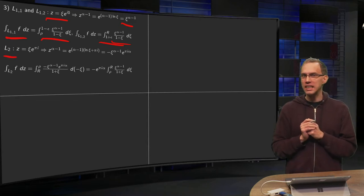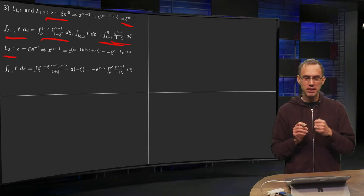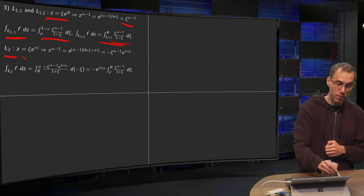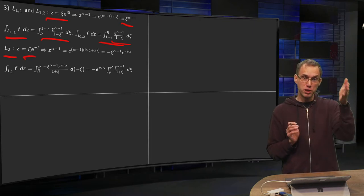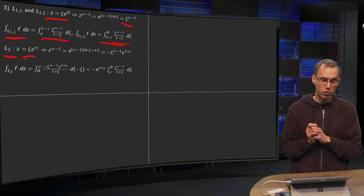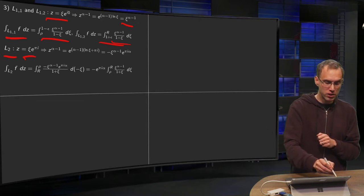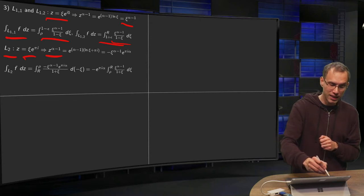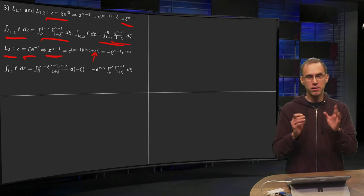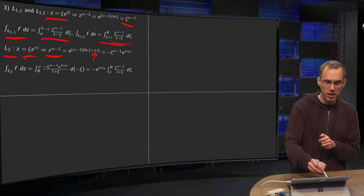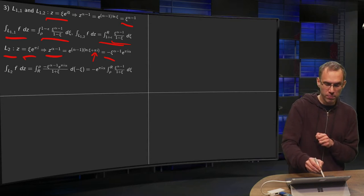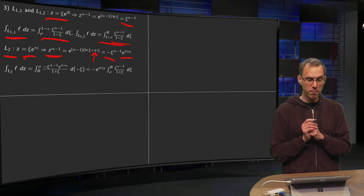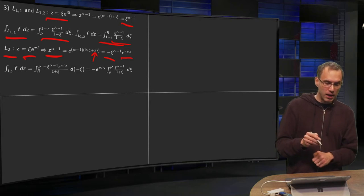Along L2, that is a bit annoying. Because along L2 we have to parameterize z equals psi e to the power pi i, argument is pi over there. Remember how we took our branch cut. So your z to the power alpha minus 1 gets you an additional factor pi i here. Okay, that's fine. So you get minus z to the power alpha minus 1 from the minus pi i and e to the power pi i alpha.